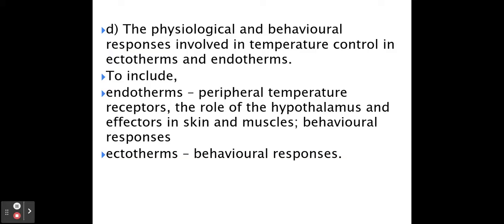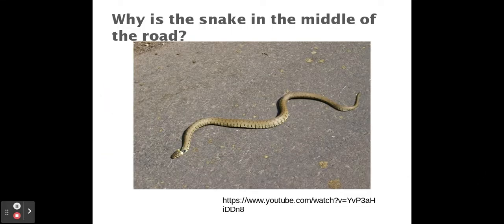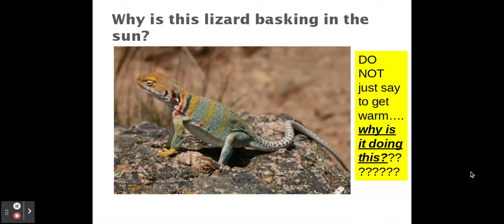Whereas an ectotherm does not generate its own heat. An ectotherm is a cold-blooded animal such as a lizard or a snake, and in order for these animals to warm up they have to go and sit in the sunshine. In order to cool down they have to go and sit in the shade. That's why in warm countries you might see snakes in the middle of the road or lizards basking in the sunshine.